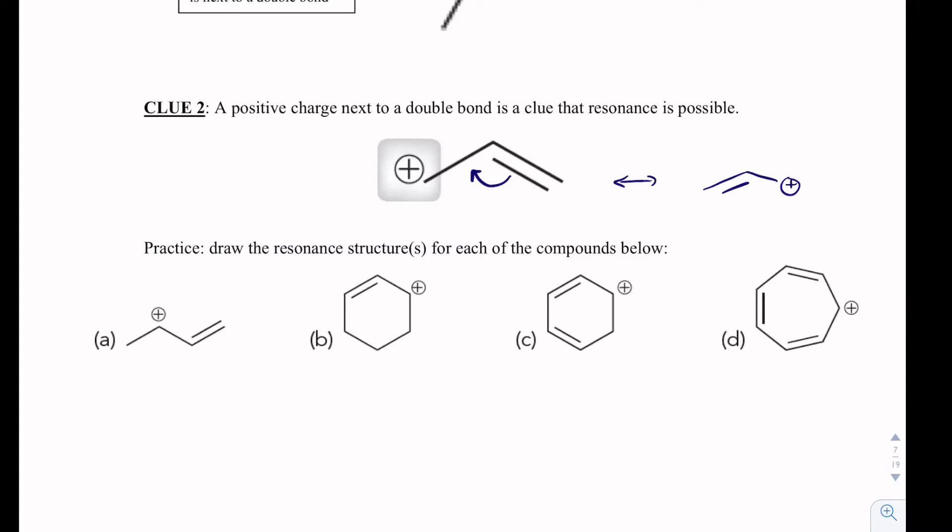What we want to do is I'm just going to do some examples. I'm not going to do all of the examples here. One thing I don't want you to think is that you always just have one additional resonance structure. You could have lots of resonance structures, and so we'll see that here.